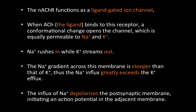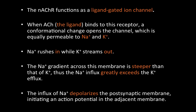The Na+ gradient across the membrane is steeper than that of the potassium ions. So the Na+ influx will greatly exceed the potassium efflux — meaning more sodium comes in per unit time than the amount of potassium going out. This creates a net positive charge inside the postsynaptic membrane.